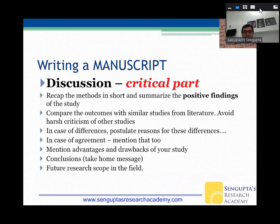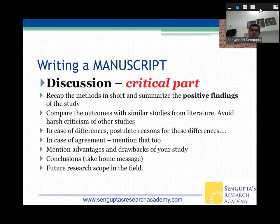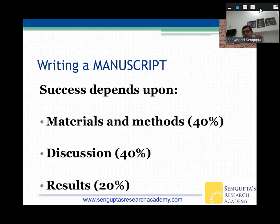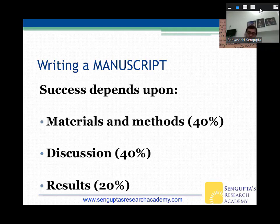For the discussion, initially recap the methods in short and summarize the positive findings. Compare outcomes with similar studies from literature — avoid harsh criticism of other studies, and postulate reasons for differences. Mention advantages and drawbacks of your study, conclusions, and future research scope. The success of a paper really depends upon the materials and methods and how you have discussed it. Even negative results can make good papers — showing that IOP drops equally in both phaco and SICS was a relatively negative result but was published in Ophthalmology.